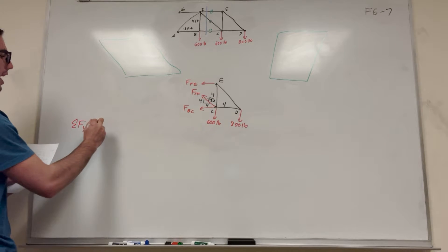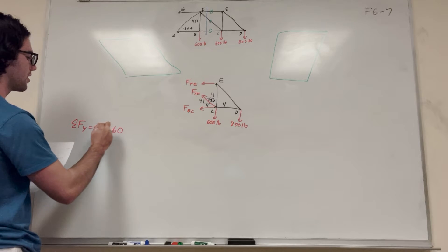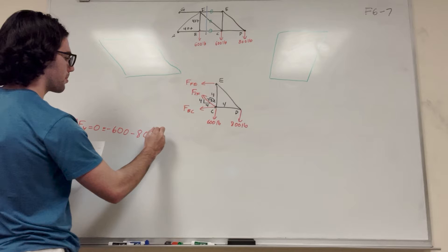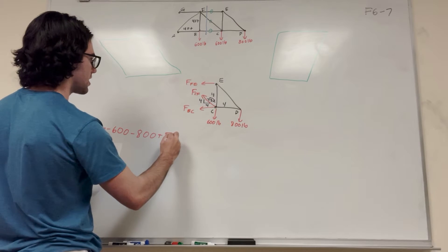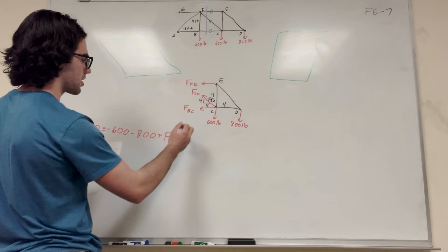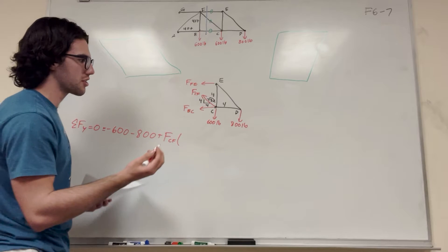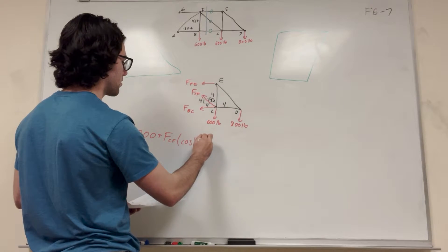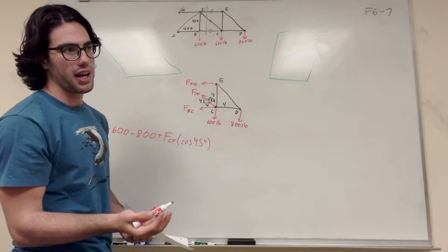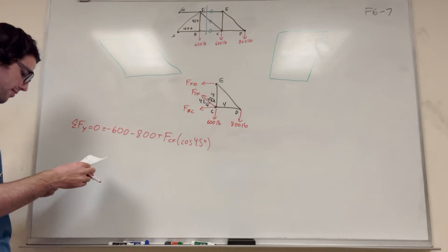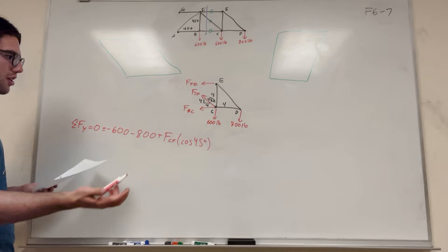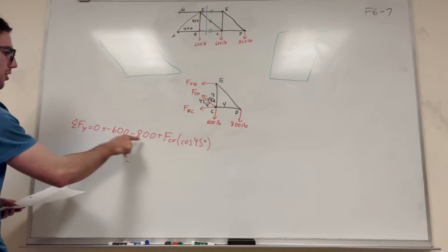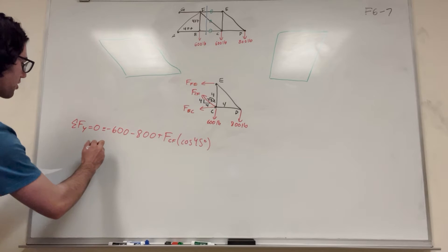We know it's equal to zero, of course, so then we have negative 600 minus 800 plus FCF. And then, of course, it's going to be cosine. So you can either say cosine of 45, that's what I'm going to do, because we know that this is a 45 degree angle.